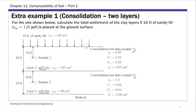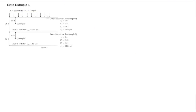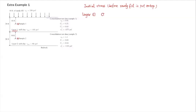Let's start with layer 1. We need to calculate the initial stress at the sampling location, which is the middle of the clay layer. This is the initial stress before any sandy fill is placed on top. The initial effective stress at the representative sampling location — the middle of layer 1 — we'll call this σ₀₁ prime.